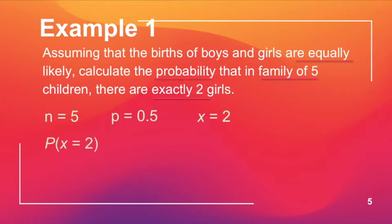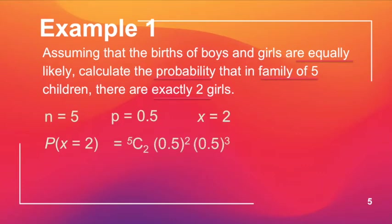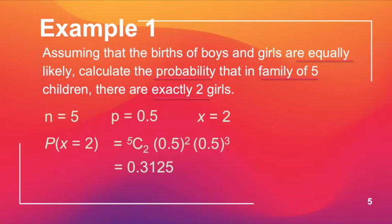We're assuming our random variable is the number of girls, though you can also make the number of boys your random variable. So the question is P(X = 2). Using the binomial formula from a past lesson, this is combination of 5 taken 2, times 0.5 squared, times 0.5 to the power of 3. We get the answer 0.3125, or 0.313 in three significant figures.